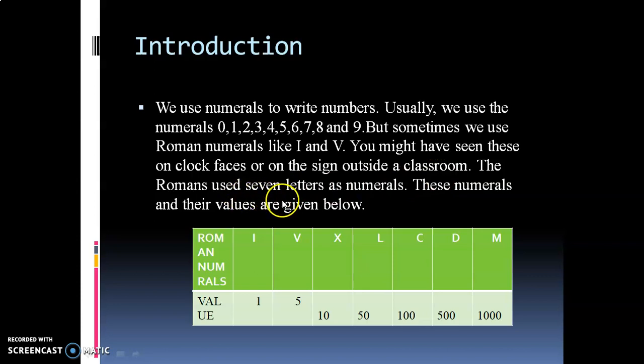The Romans use 7 letters as numerals. These numerals and their values are given below: I means 1, V means 5, X means 10, L means 50, C means 100, D means 500, M means 1000.